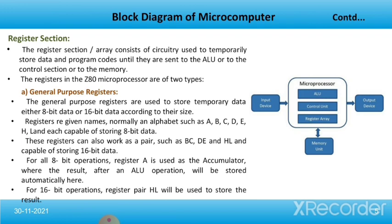These registers can also work as pairs such as BC, DE, and HL. When working as a pair, they are capable of storing 16-bit data. For all 8-bit operations when not used in a pair, register A is used as an accumulator — the storage where the result after an arithmetic and logical operation will be stored automatically. For 16-bit operations when registers work as a pair, the register pair HL is used to store the result.